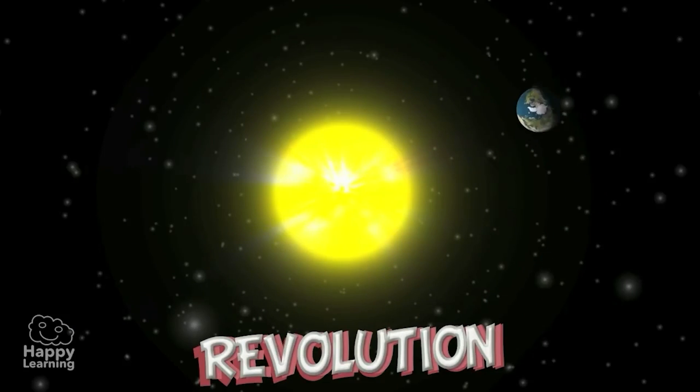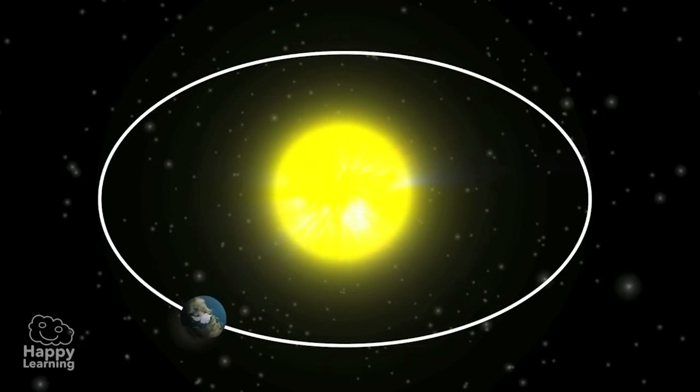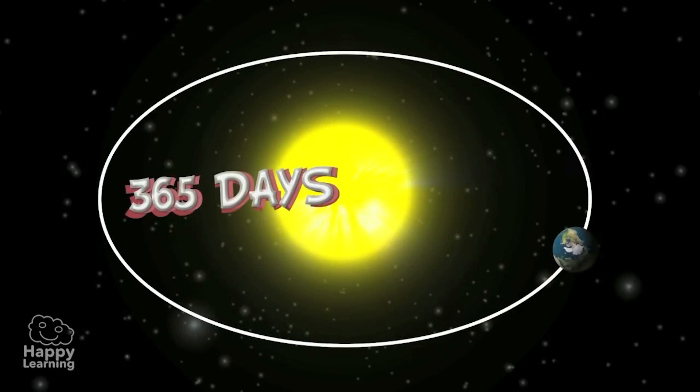And there is revolution, which is the Earth traveling around the Sun, which takes 365 days and causes the seasons.